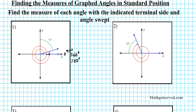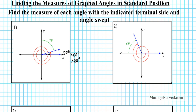Now if this is 720 degrees right here, after two rotations, if I go another quarter of a full circle — a quarter of a circle is 90 degrees — so if I go a quarter of a circle after two full circular rotations, I add 90 to that. This angle right here will be 720 plus 90, which is 810 degrees.